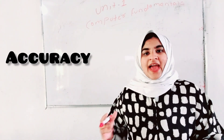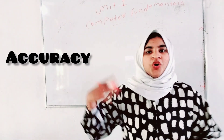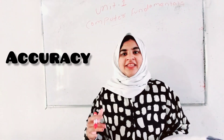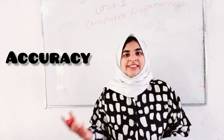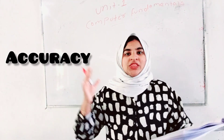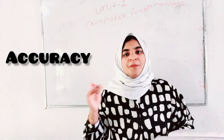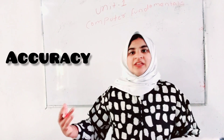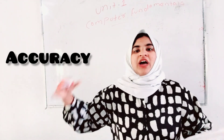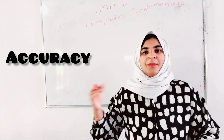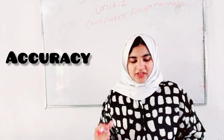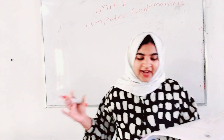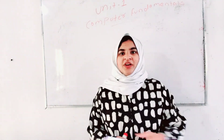What is the result of accuracy? Accuracy is the result of our data. The third one is diligence. Okay, the third one is diligence. The next characteristic is accuracy.